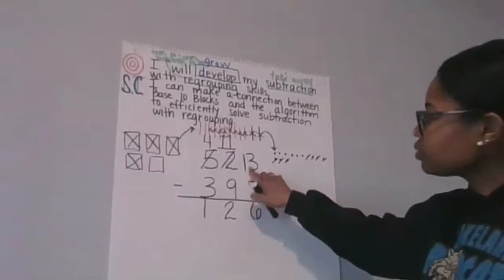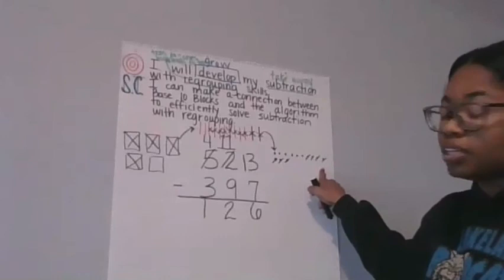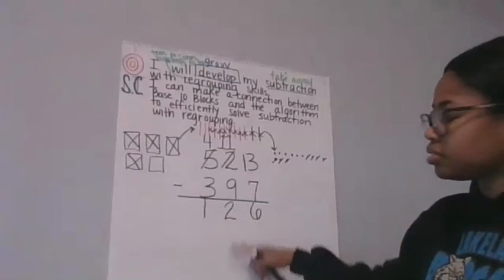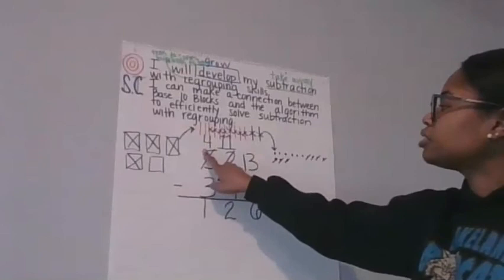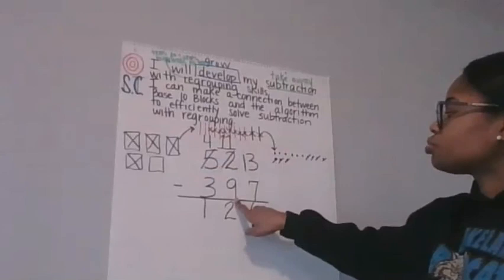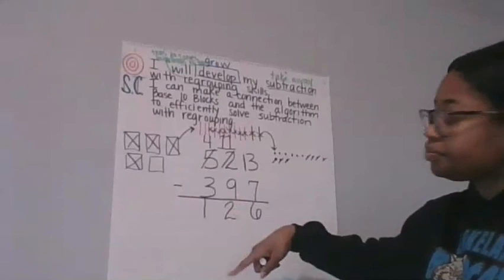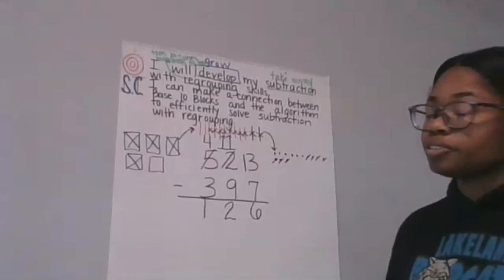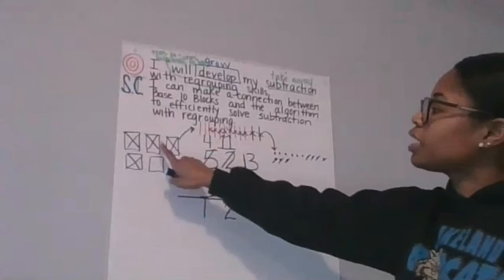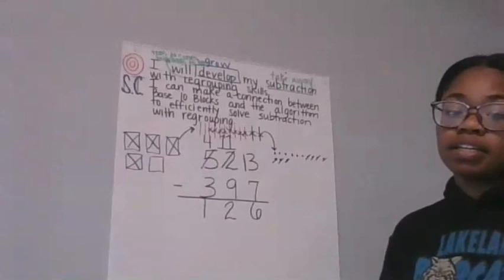I see that when I needed to regroup, I could see how the 10 was broken up into 10 ones so that I can have enough ones to subtract the 7. Another connection I see is when I had to regroup my hundreds, I could see the 11 tens to subtract the number 9, which gave me that two tens left. And just like in the hundreds place, I started off with five. I had to regroup one of them, but I could also see when I was left with four, I could take away three of them, and that was leaving me with one.